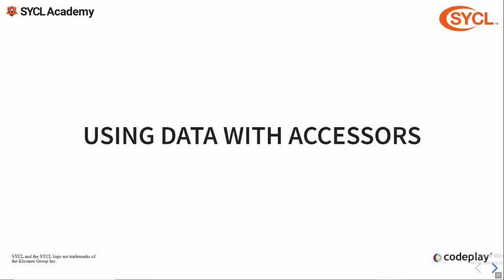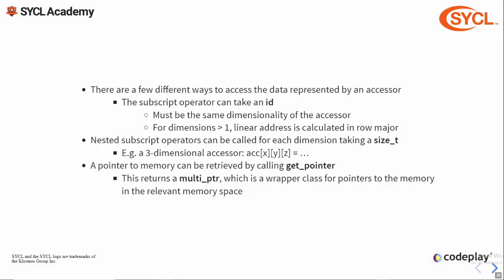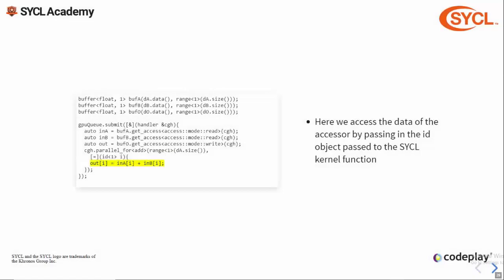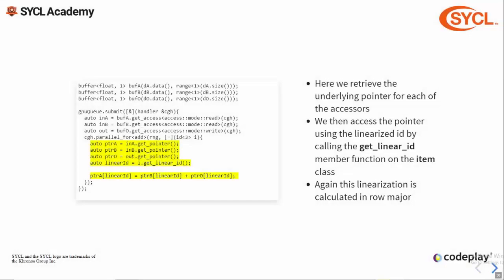Finally we're going to take a look at ways in which you can access data either in a kernel or on the host application using accessors. There are a few different ways to access the data represented by an accessor. Firstly the subscript operator takes an id, and for dimensions larger than one the index is linearized using row-major ordering. You can also use nested subscript operators when there's more than one dimension. Finally you can retrieve a pointer to the underlying memory by calling get_pointer, which returns a multi_ptr object — the pointer wrapper class that knows the memory space the data is in. For example, you can retrieve the multi_ptr for each accessor and use the subscript operator on it, using the id's member function get_linear_id to retrieve the linearized id in row-major ordering.